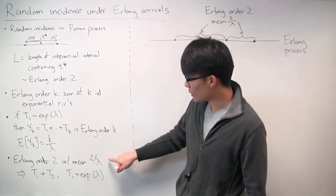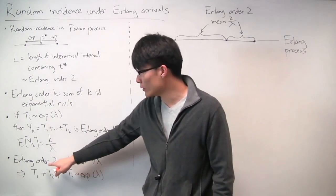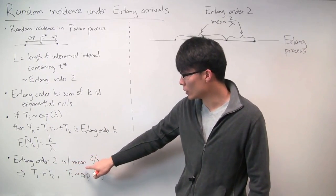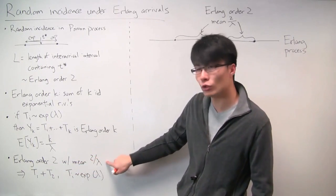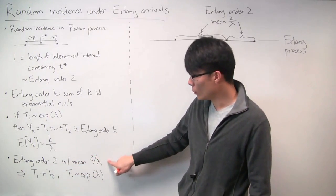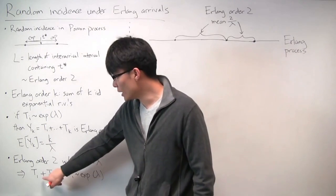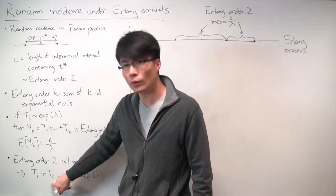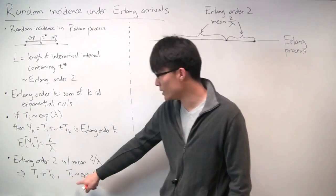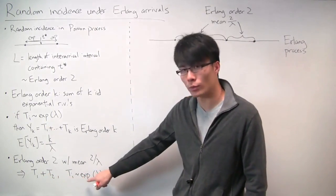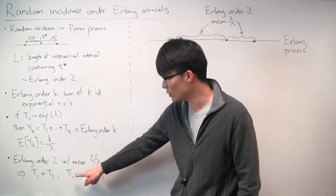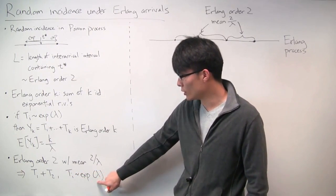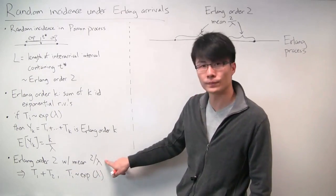As a consequence, an Erlang random variable of order 2 has a mean of 2 over lambda, and we can interpret it as the sum of two iid exponential random variables t_1 and t_2, where each one is exponential with rate lambda.